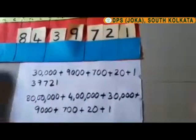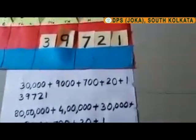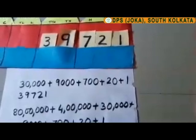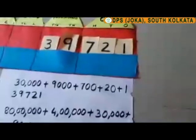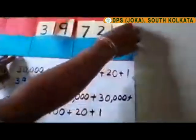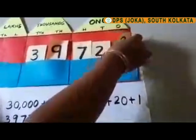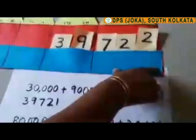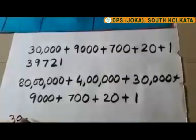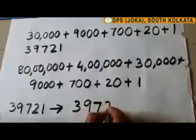Now let us take the previous number, 39,721. If we have to find the number after 39,721, what do we do? We just add 1 in the ones house. So the number after 39,721 is 39,722. This is called the successor of the number. The successor of 39,721 is 39,722.